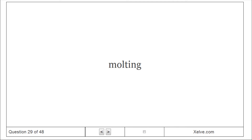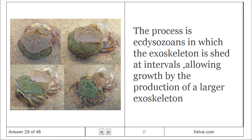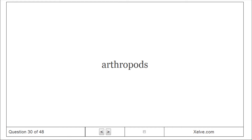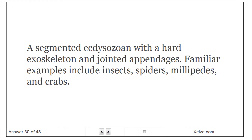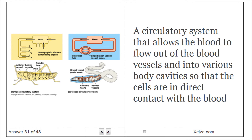Molting. The process in ecdysozoans in which the exoskeleton is shed at intervals, allowing growth by the production of a larger exoskeleton. Arthropods. A segmented ecdysozoan with a hard exoskeleton and jointed appendages; familiar examples include insects, spiders, millipedes, and crabs. Open circulatory system. A circulatory system that allows the blood to flow out of the blood vessels and into various body cavities, so that the cells are in direct contact with the blood.